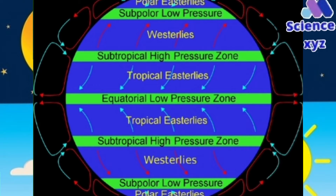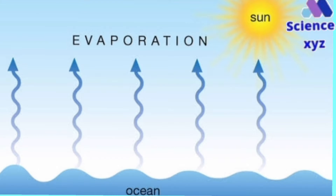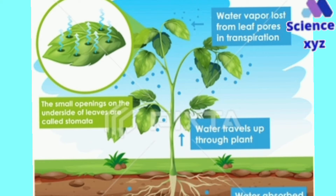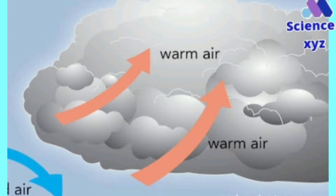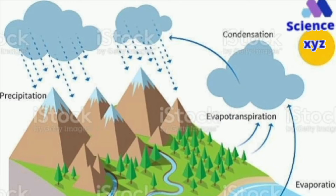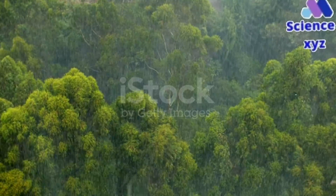Water evaporated from oceans gets transmitted by wind to these regions, so the air contains moisture. Transpiration by plants also adds moisture to the air. The hotter air rises up, and at some height the water vapors experience a cooler climate. They then turn into water, which comes down to earth as rain, causing heavy rainfall in these regions.